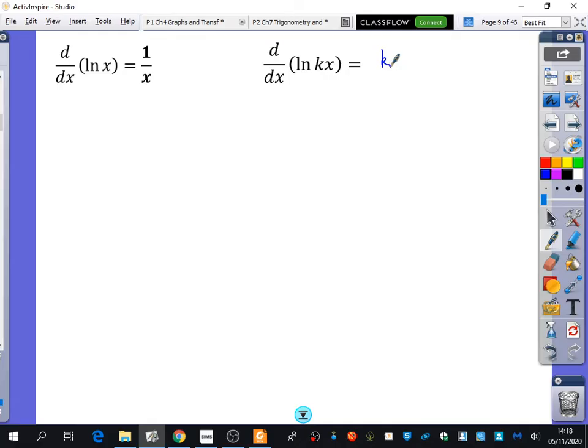So when we had e to the kx, it differentiated to ke to the kx. So I think this would be k over kx, which is 1 over x. So that's really weird. ln of x differentiates to 1 over x. But ln of kx differentiates to 1 over x. And I'm going to show you why that's true. So the patterns from before made us think that that was going to be the case. But we're actually going to see why. And this is to do with your log laws.